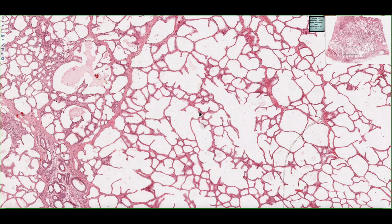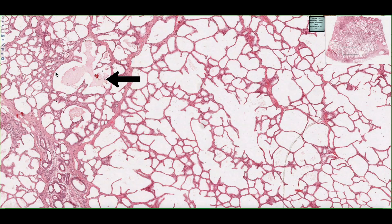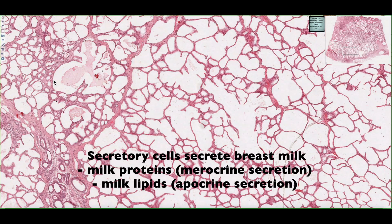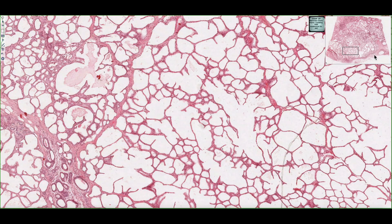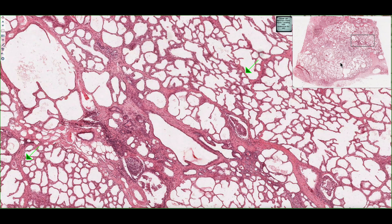We're now looking at a lactating mammary gland. We can see that the alveoli making up this mammary gland are now really dilated, and we can see the walls between the various alveoli. Some of them have a buildup of breast milk, which is composed of milk lipids and milk proteins. The milk proteins are released by cells surrounding the alveoli through merocrine secretion, where they are released directly into the lumen with no loss of cytoplasm. However, some cells secrete the milk lipids through apocrine secretion, in which they actually do lose a portion of cytoplasm along with the secretory product.